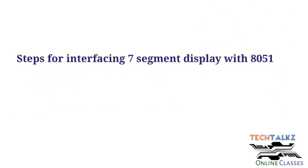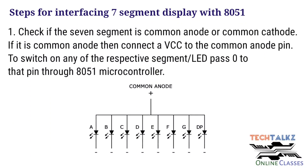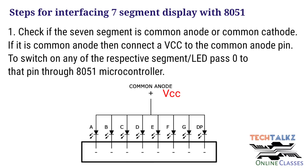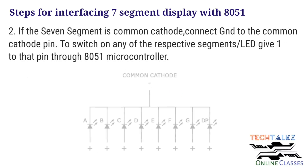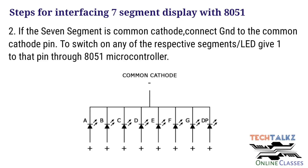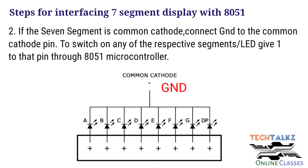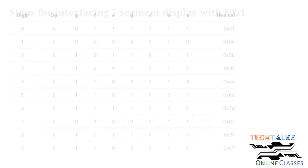Next, interfacing steps. The two types are common anode and common cathode. If it is common anode, connect VCC to the common anode pin. If it is common cathode type, connect the common cathode pin to the ground level. To switch on any respective segment, give logic 1 to the anode pins using the microcontroller.